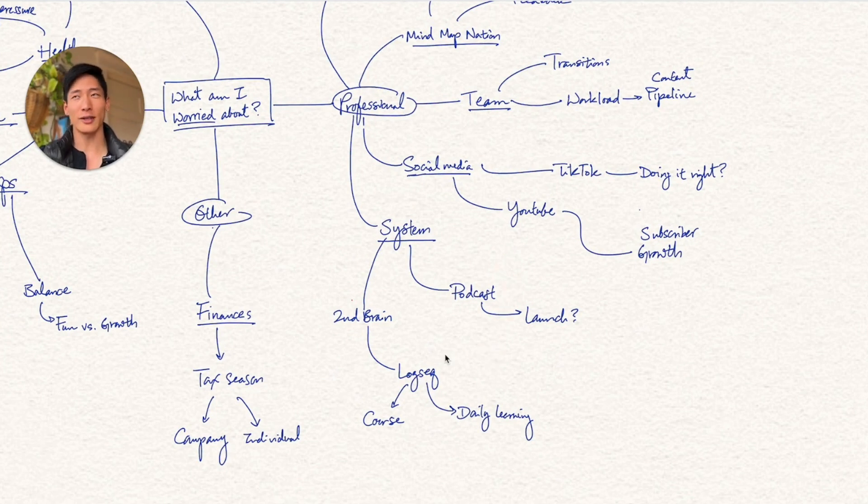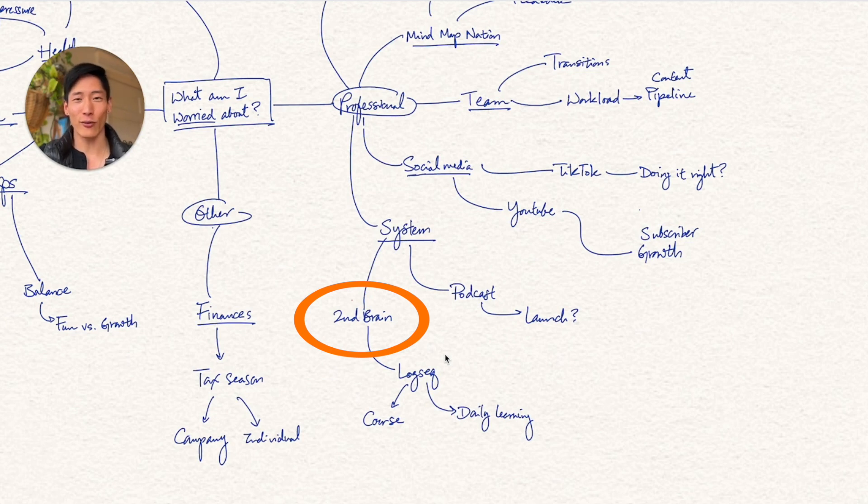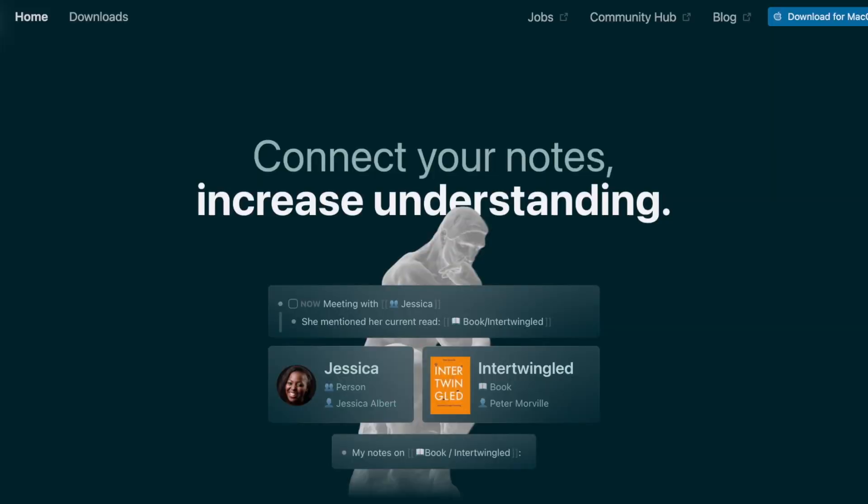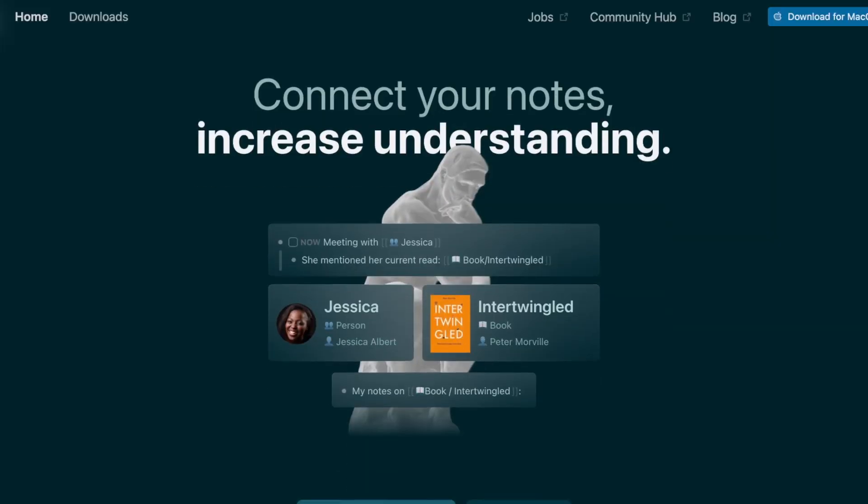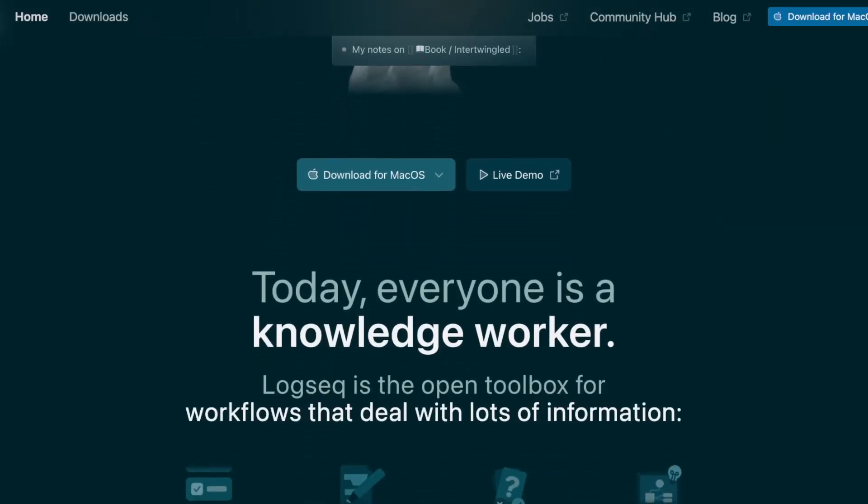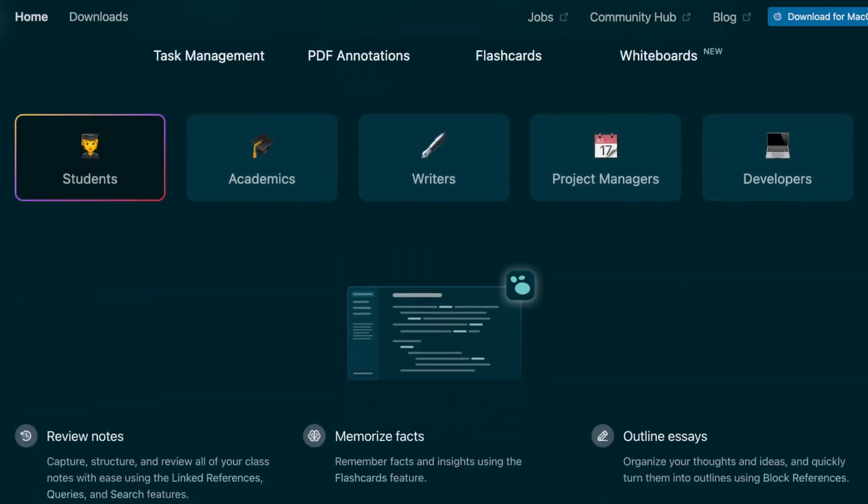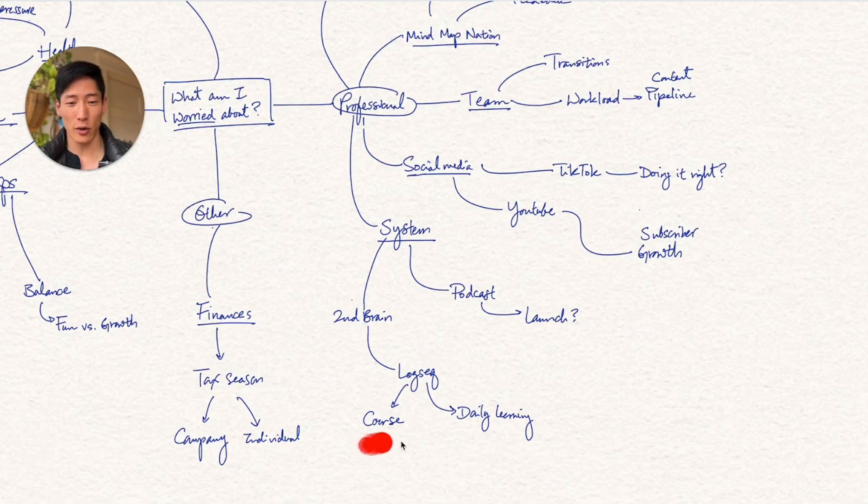And then finally, there is a content creation system that I am building to support all of these. And then there's actually two new components that's upcoming that I still need to build. The first one for all the productivity nerds out there is a second brain or external brain software, which is essentially like Roam, Obsidian, and LogSeq. These are basically connected thinking, note-taking apps that act as a personal knowledge management system.